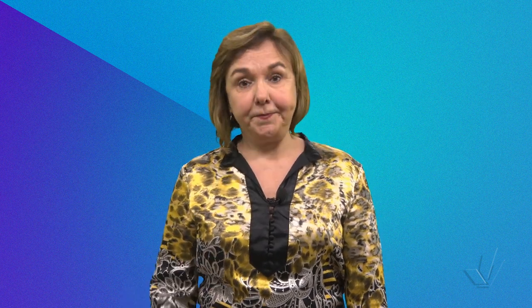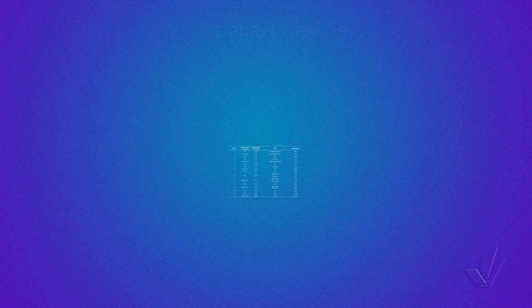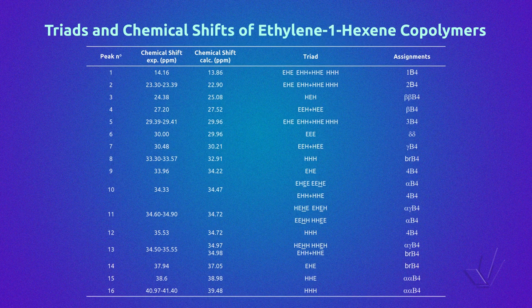Let's see an ethylene-1-hexene copolymer. This copolymer has in the main chain ethylene units and some butyl branches, as we can see in the figure, with the corresponding nomenclature for each carbon. Here we have a table that has in the first column all the possible peaks from 1 to 16 of an ethylene-1-hexene copolymer. In the second column, we have the experimental chemical shift in ppm, obtained directly from the spectra.